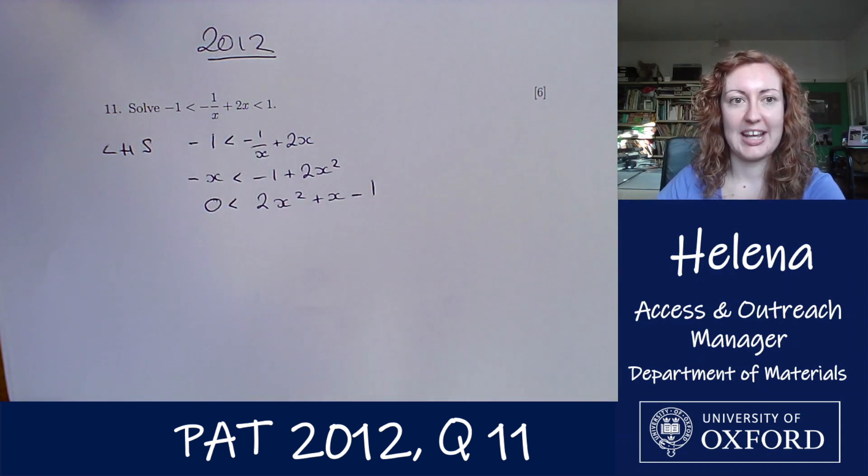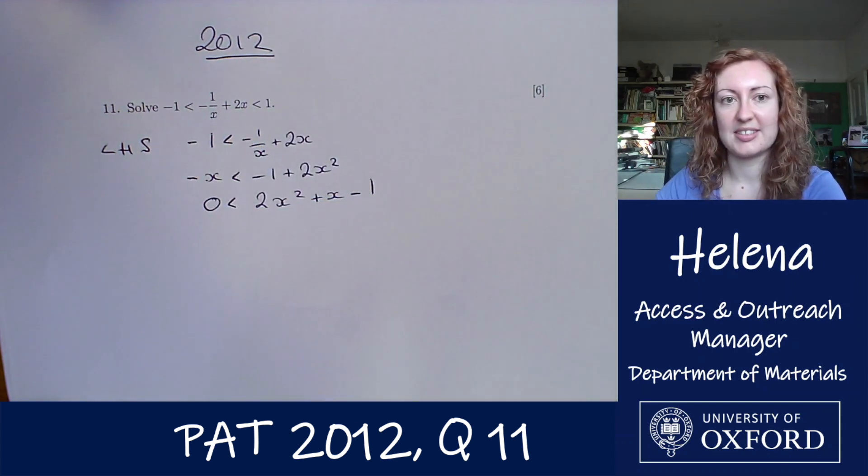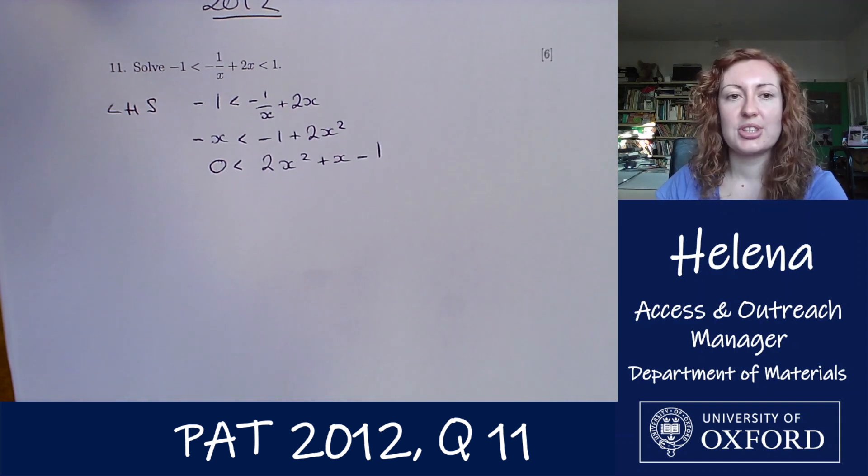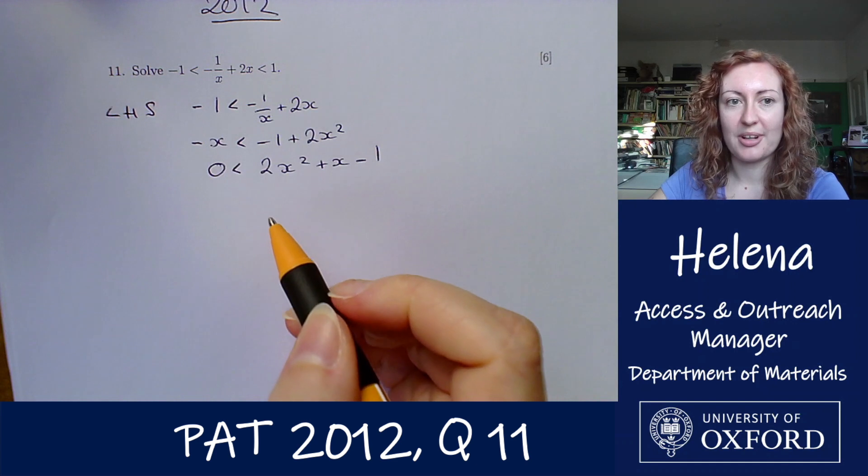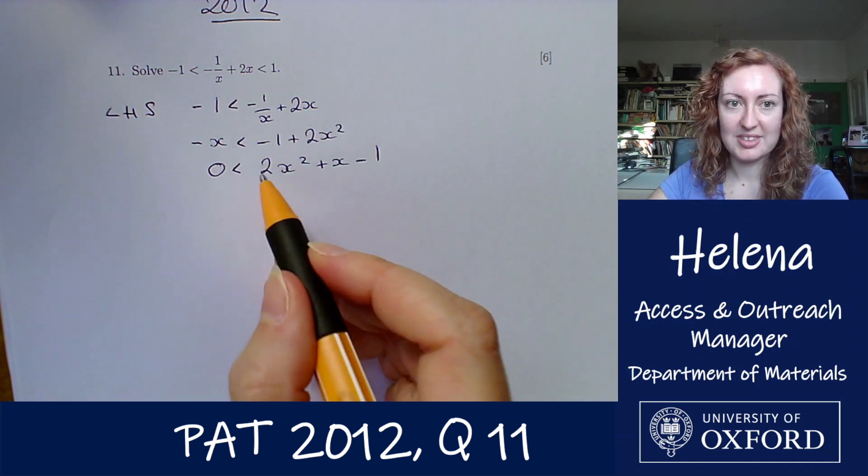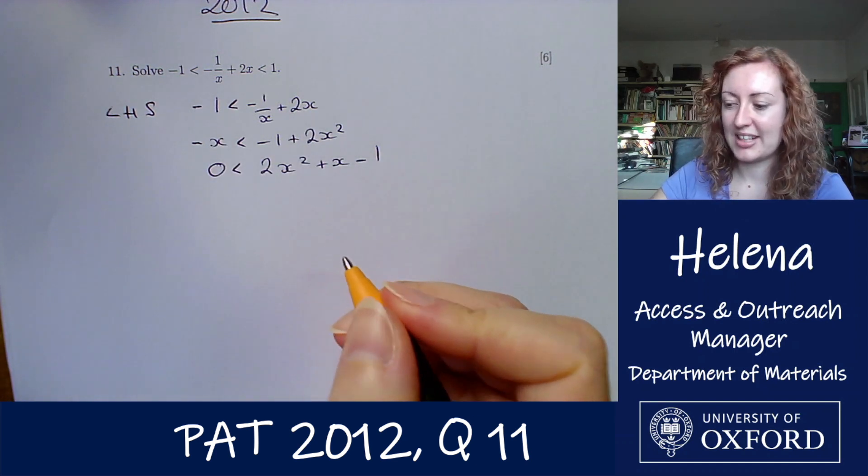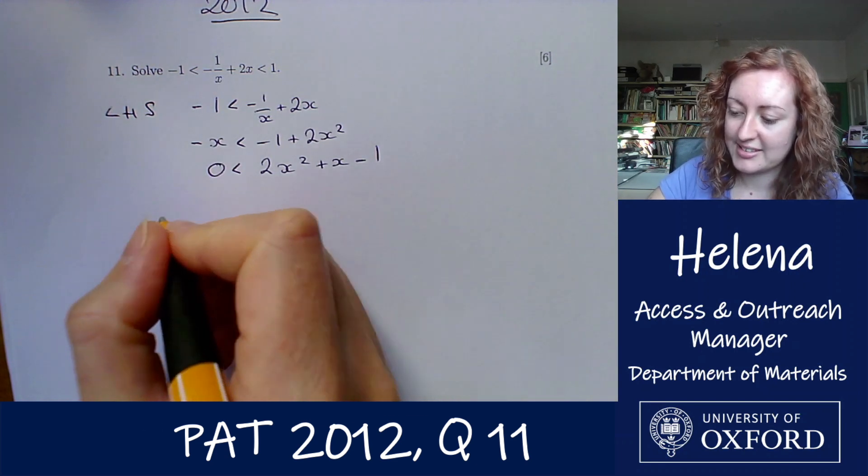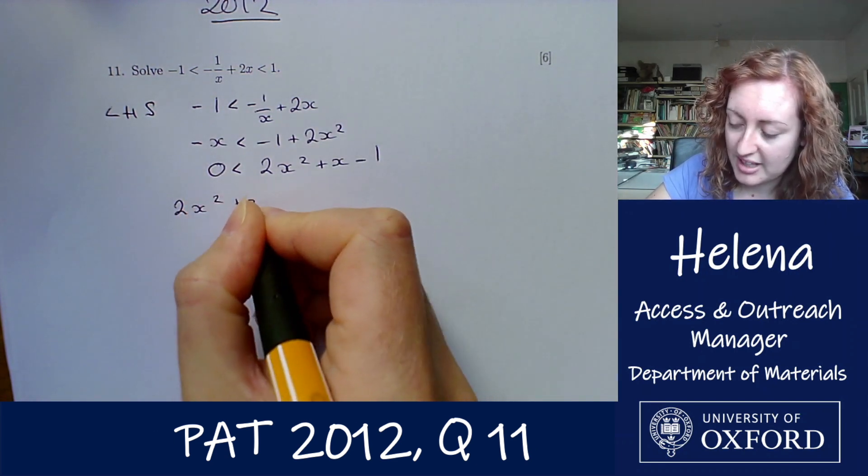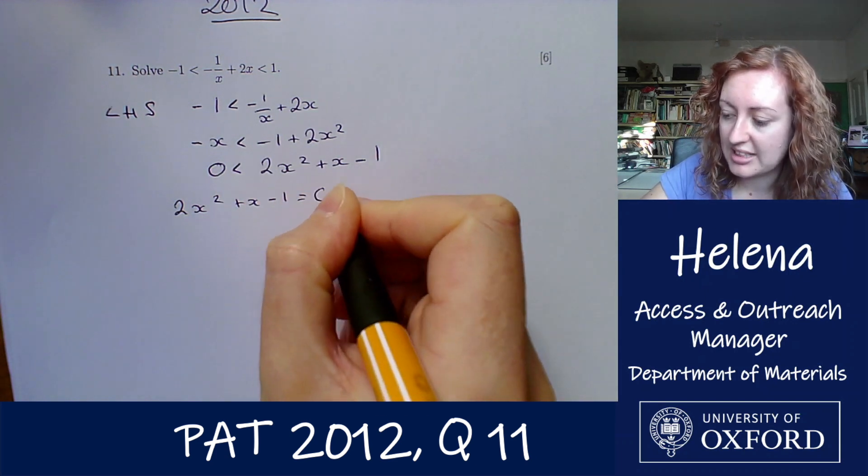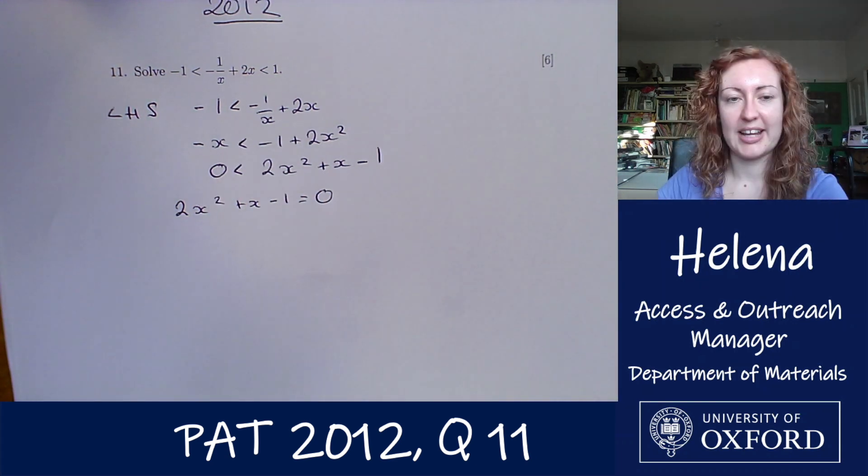0 is less than 2x squared plus x minus 1. So we've got that from just the left hand side of this inequality. So in order to find the boundary values for x for this inequality, let's set this equal to 0 and solve the quadratic here. So 2x squared plus x minus 1 equals 0. Now let's solve this.